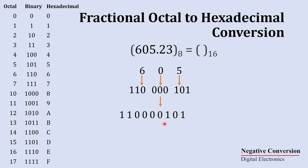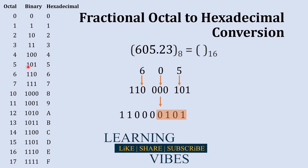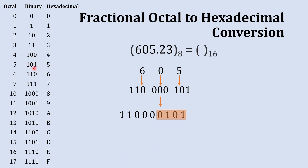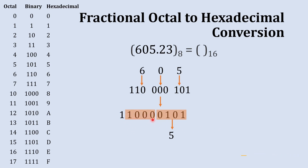Now we convert this binary number into hexadecimal by creating sets of four digits from the right side, because each hexadecimal digit is represented by a four-bit binary number. The first set of four digits is 0101, which equals 5 in hexadecimal. The next set is 1000, and its hexadecimal equivalent is 8.